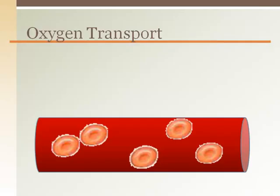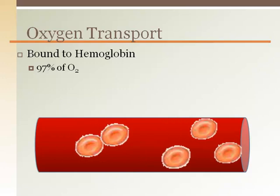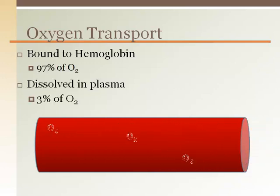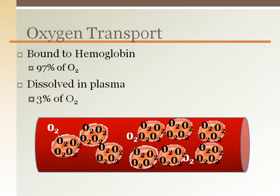Oxygen is transported through the blood two different ways. 97% of the oxygen is transported on hemoglobin inside the red blood cells, and the other 3% is transported dissolved in the plasma. Our blood is almost half red blood cells, which makes our oxygen delivery capacity very high. When we go to high altitudes, our bodies make even more red blood cells so we can carry more oxygen. Some banned performance-enhancing drugs for athletes also increase the number of red blood cells, which increases endurance and exercise capacity.